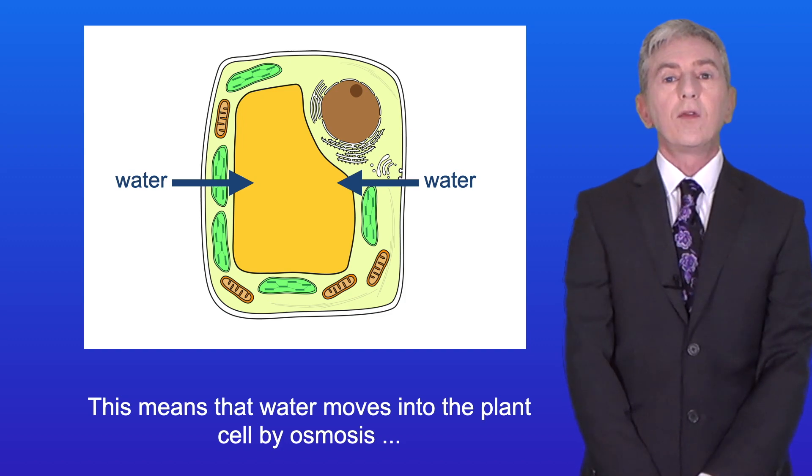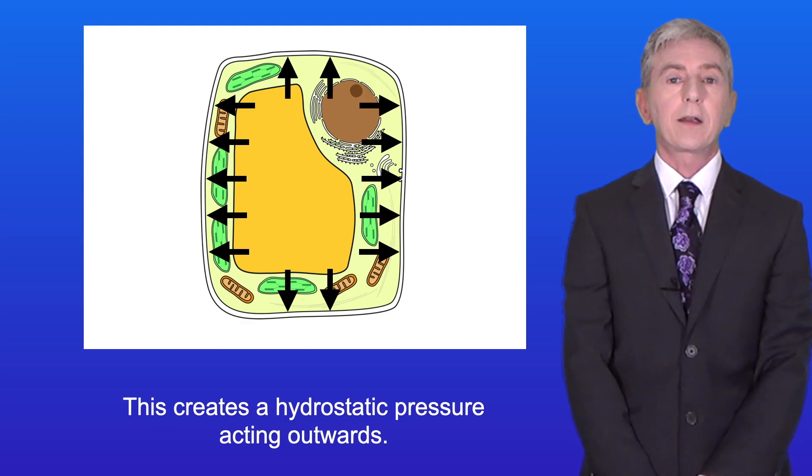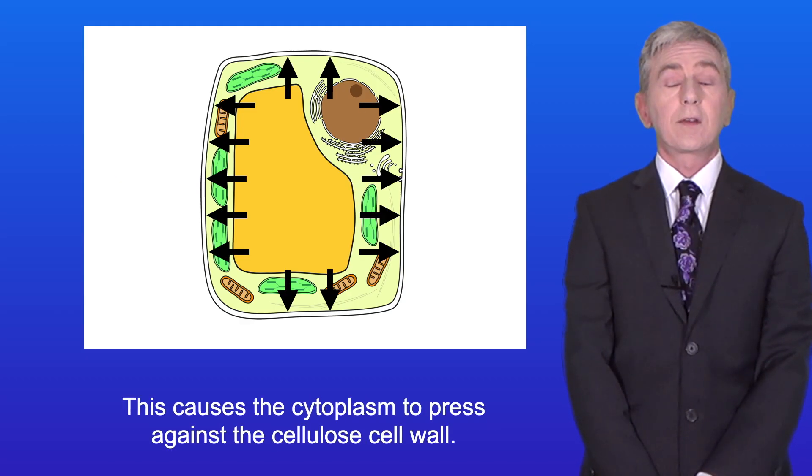This means that water moves into the plant cell by osmosis and this water enters the vacuole. This creates a hydrostatic pressure acting outwards and this causes the cytoplasm to press against the cellulose cell wall.